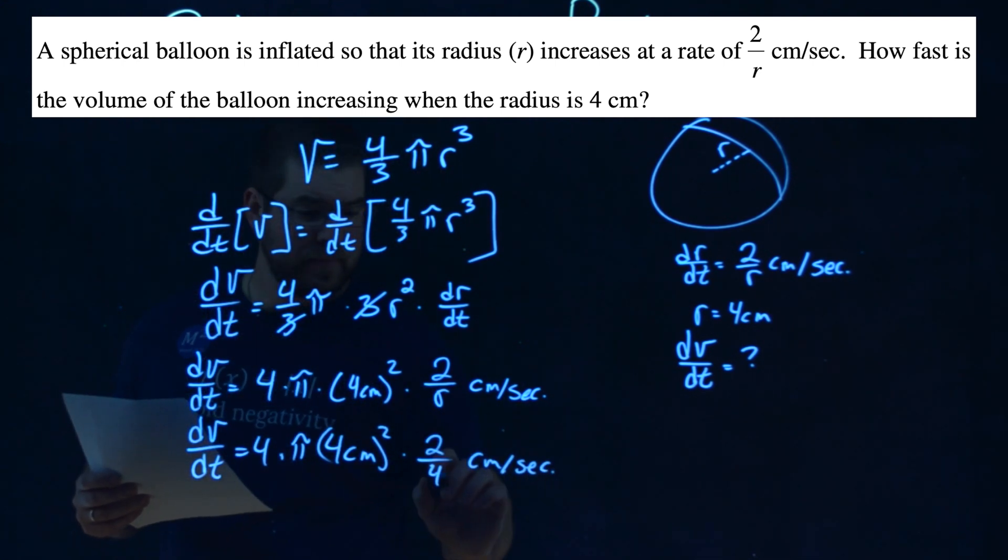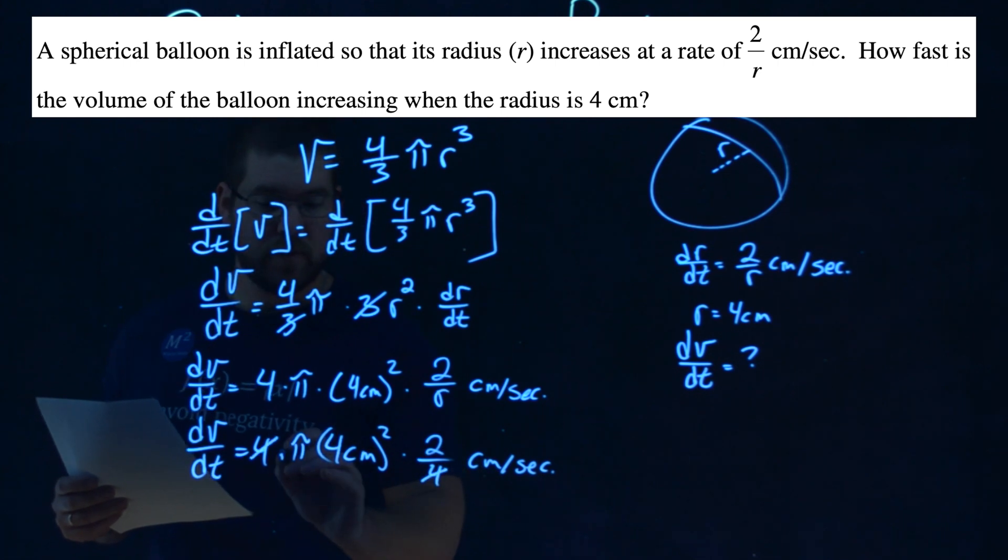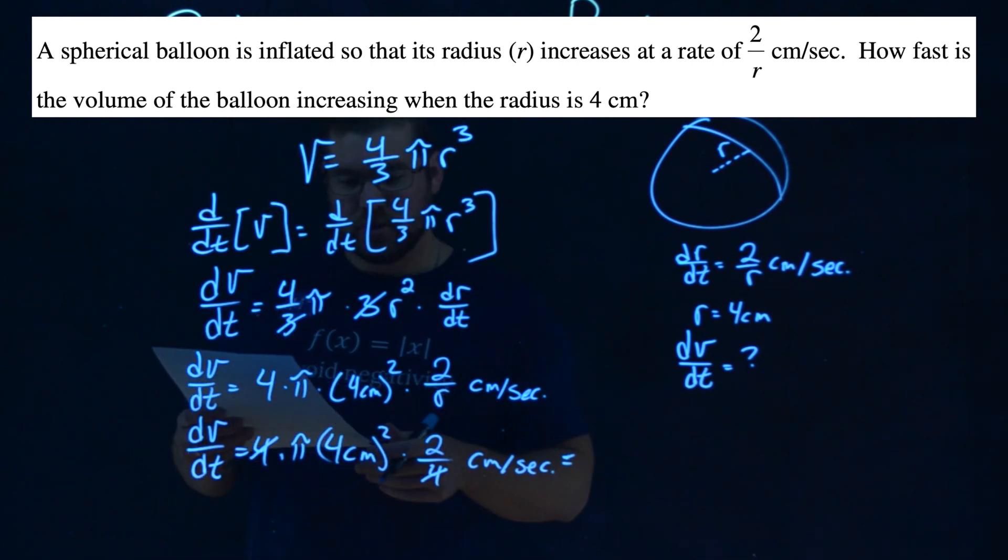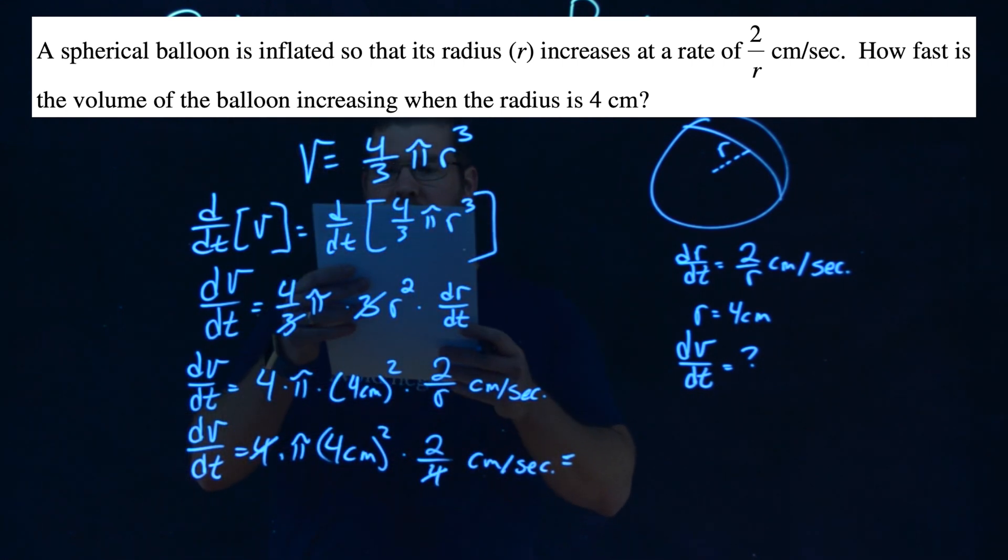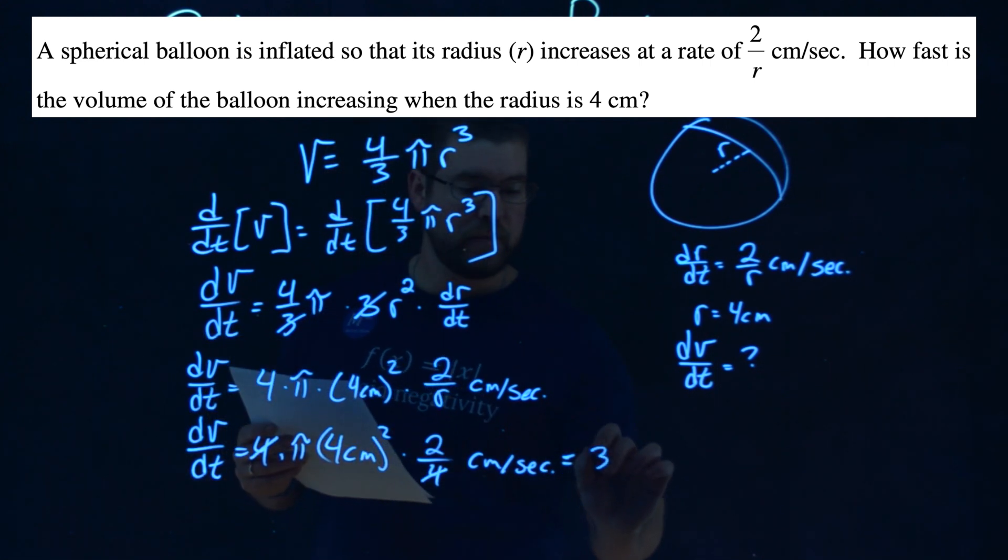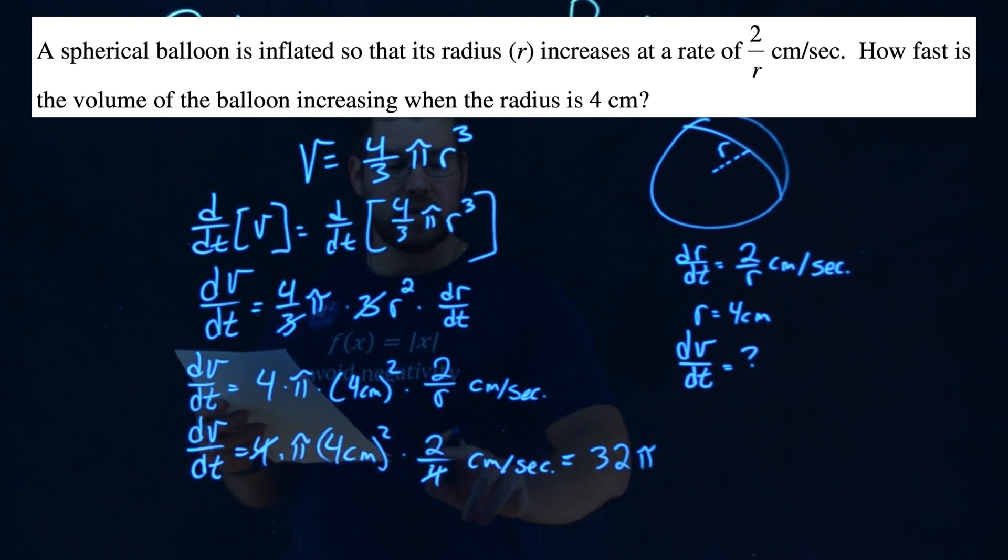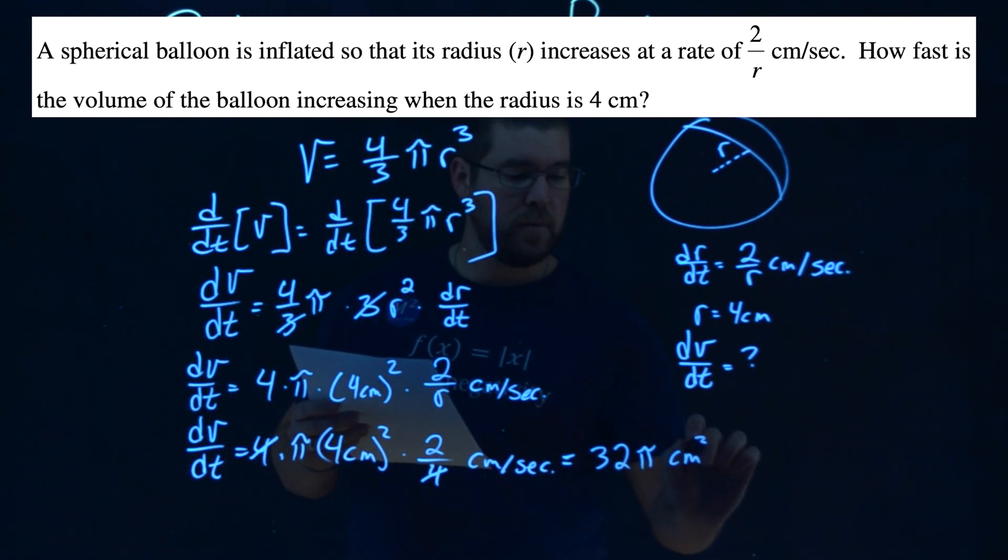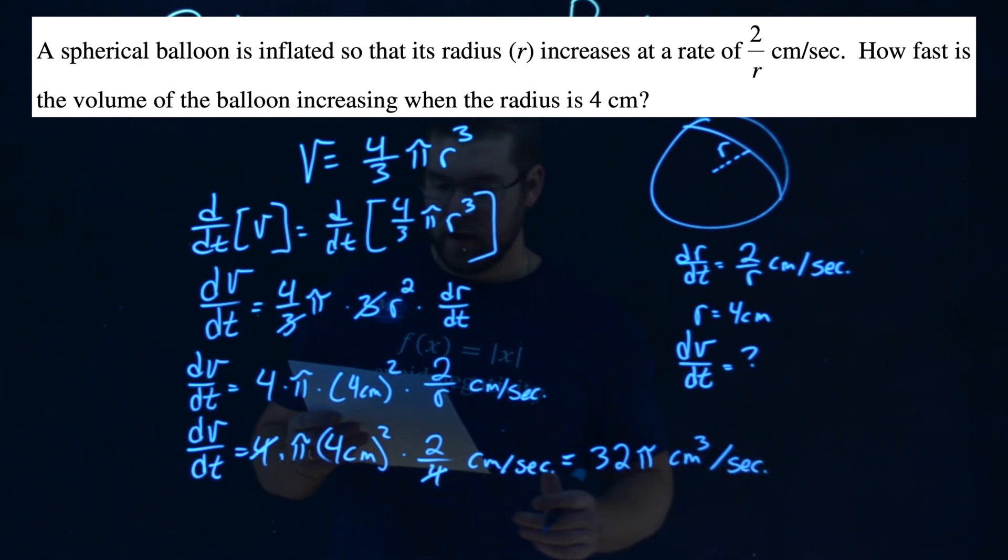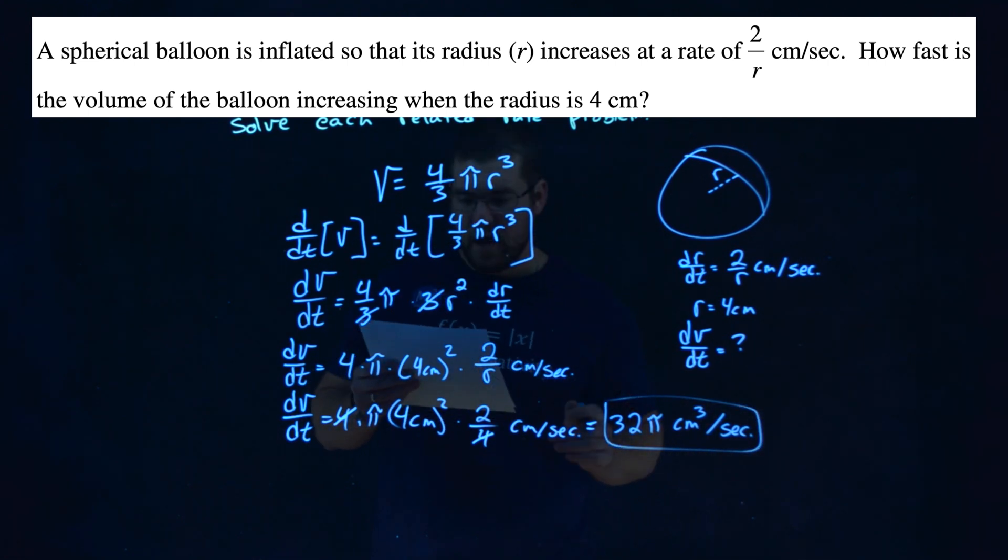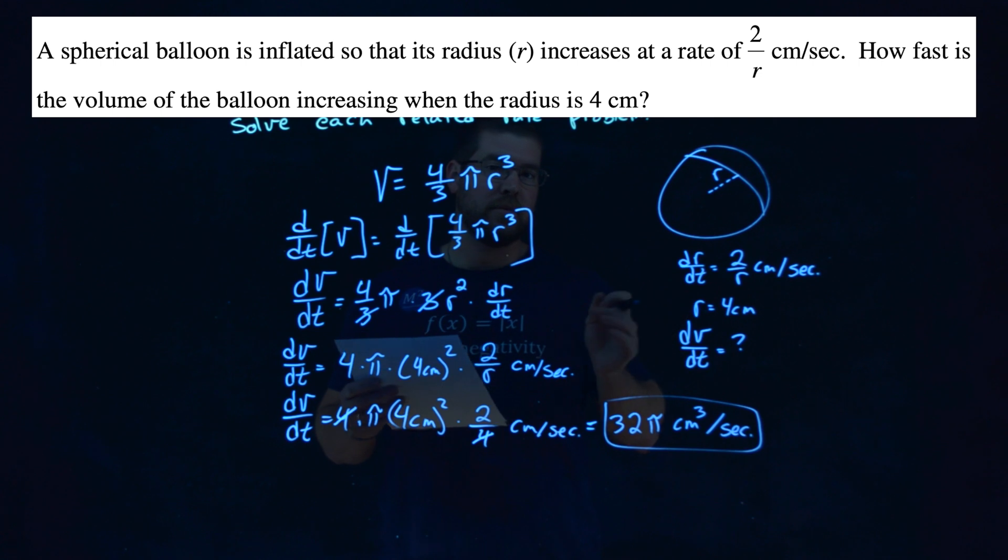Well, let's go cancel where we can. 4 cancels right here. Simplify this whole thing out, and what do we have? Well, 4 squared times 2 gives me 32. We have a pi. Then our units, we have centimeters squared times centimeters, so centimeters cubed over seconds, which actually makes sense because we're talking about the rate at which a volume is changing. And so the answer, they asked us how fast is the volume of the balloon increasing when the radius is 4 centimeters, is 32 pi centimeters cubed per second.